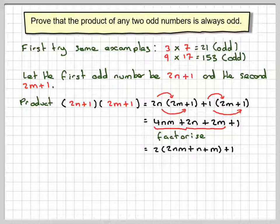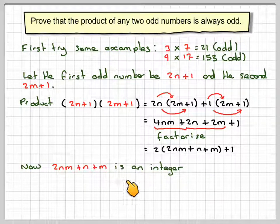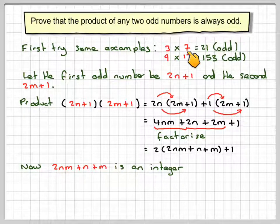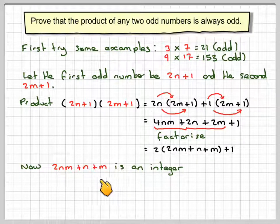So we've got the sort of format of an odd number here, 2 something plus 1. If this is an integer, then we have shown that this is an odd number. So 2mn plus n plus m is actually an integer. If m and n, to begin with, were integers, for example, in this case here, n was 2, and in the case of this one here, m was 3. And therefore, if you do that, add those together, we would actually get an integer.